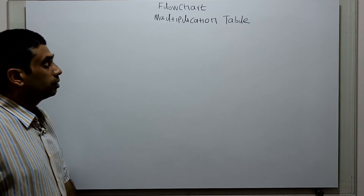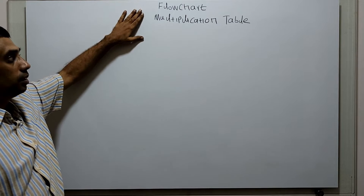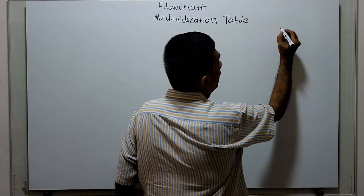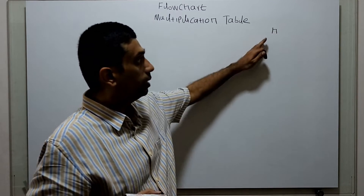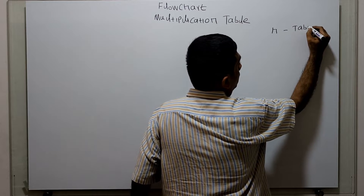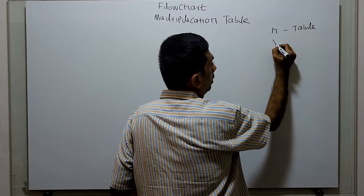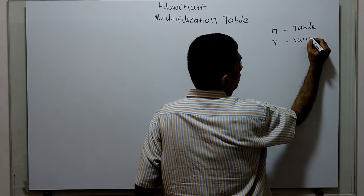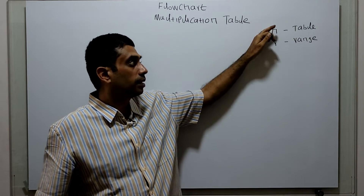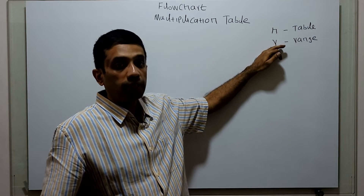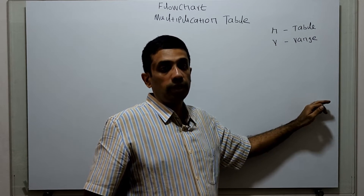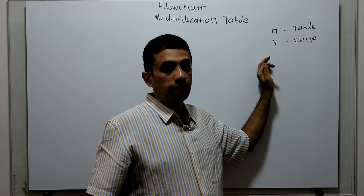Hello friends. We are going to write a flowchart to print the multiplication table using two variables: n is for which table we are supposed to print, and r stands for the range up to which number we have to print. For example, n equal to 5 means the 5 times table, r equal to 10 means up to 5 into 10 equal to 50. For this we are going to draw a flowchart.